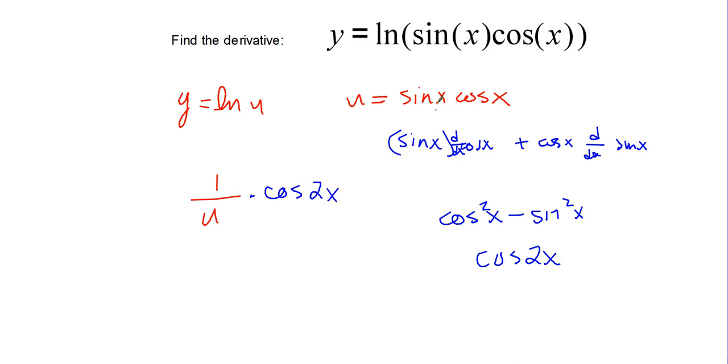u is just sine x cosine x. So we end up with cosine of 2x over sine x cosine x.